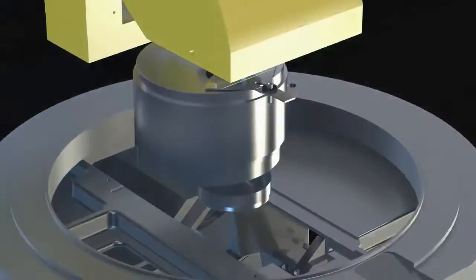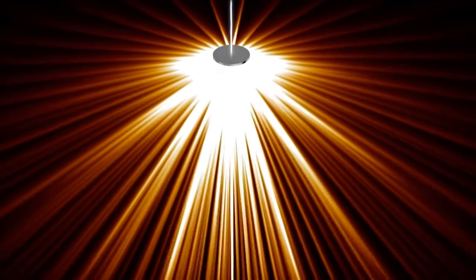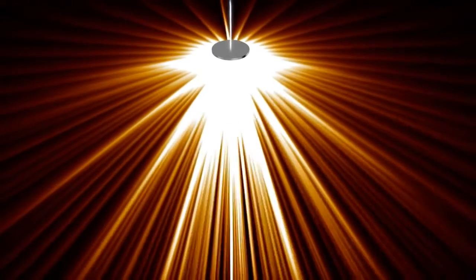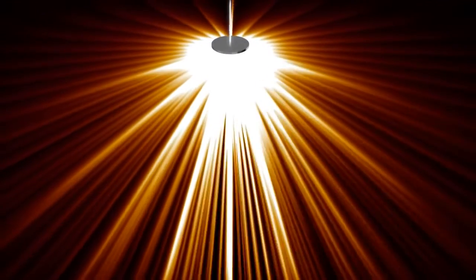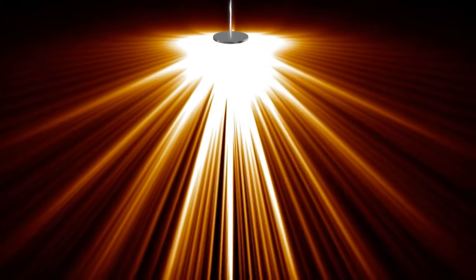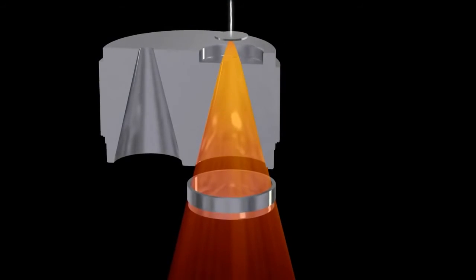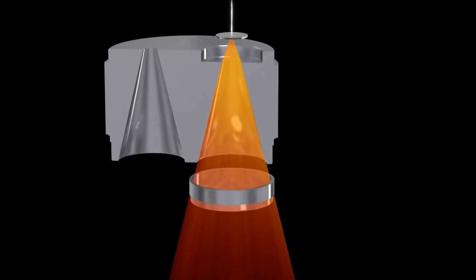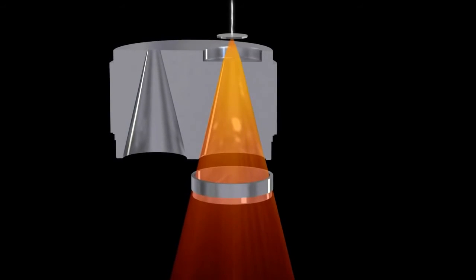The high-energy electrons hit a small tungsten target where the electron energy is converted into photons, or X-rays. The high-energy photons emerge from the target in a variety of directions. The primary collimator only allows forward-traveling X-rays to pass through, creating a cone-shaped beam.